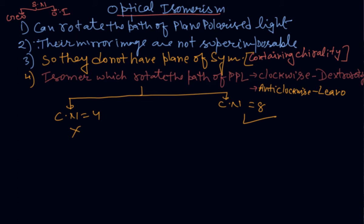Optical isomerism is shown by those complexes which can rotate the path of plane polarized light. Number two, their mirror images are not superimposable. They do not have plane of symmetry. It means they are containing chirality.